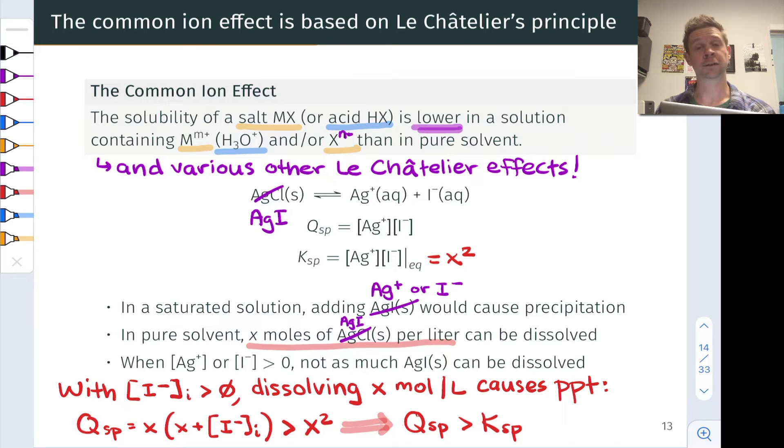If we're somehow able to manage to get all x moles per liter of silver iodide dissolved, some will precipitate. In practice, what will happen is less than x moles per liter of the silver iodide will dissolve, and we'll end up with excess silver iodide left behind, excess silver iodide solid undissolved, implying that the molar solubility of silver iodide is lower in this iodide solution than it would be in pure water. That's the common ion effect in action.